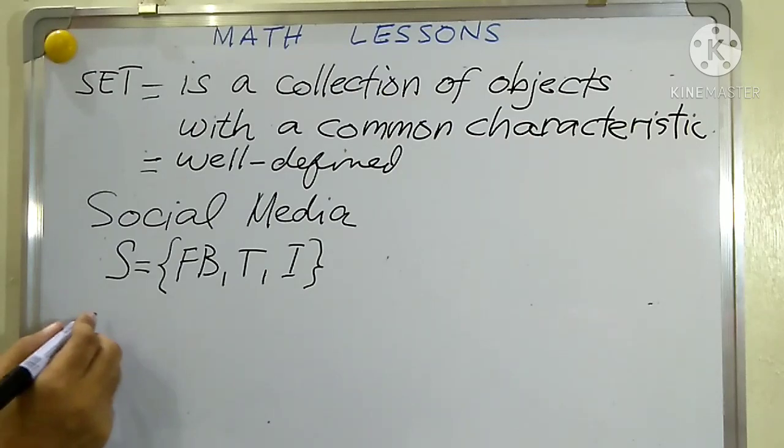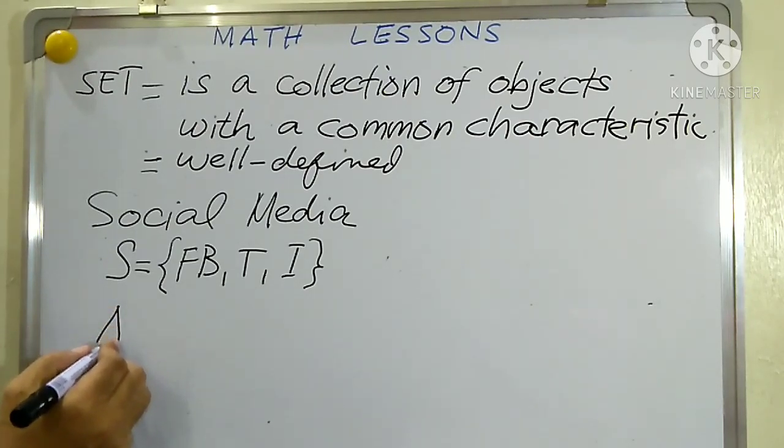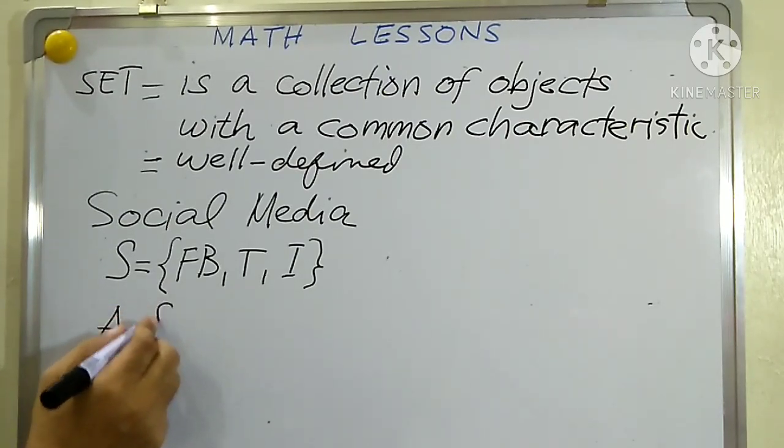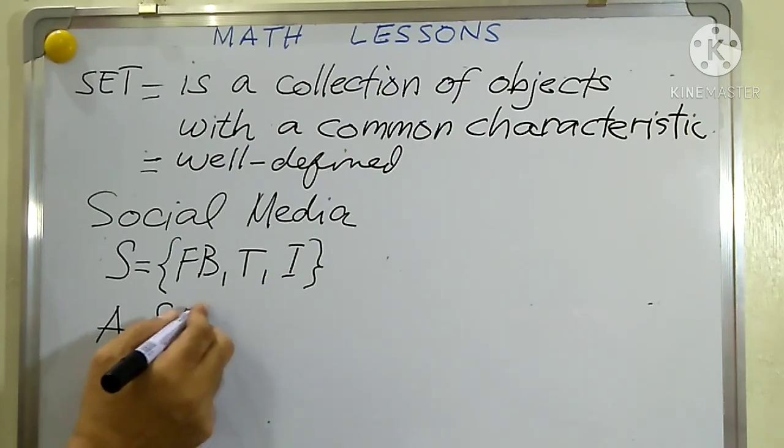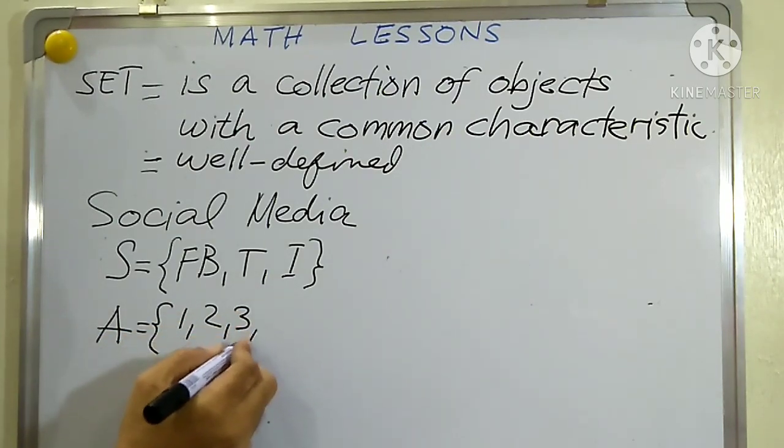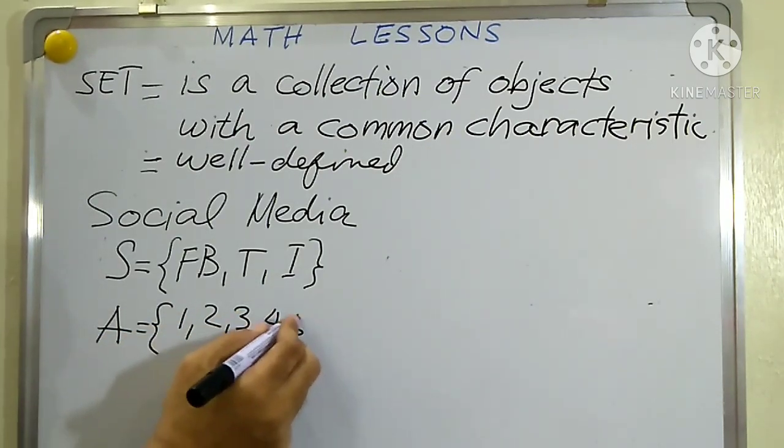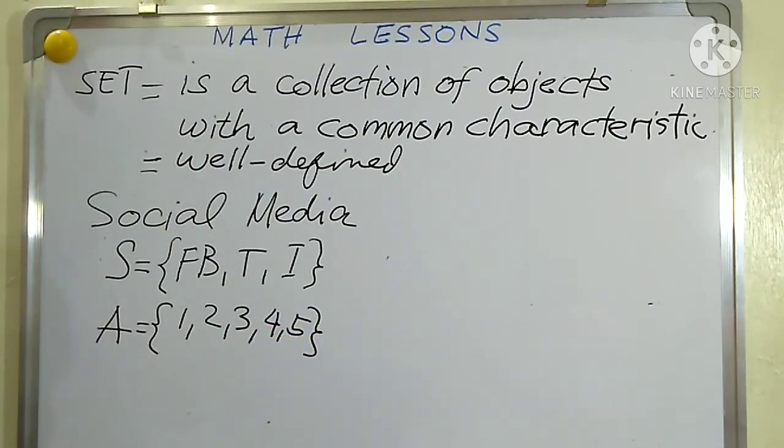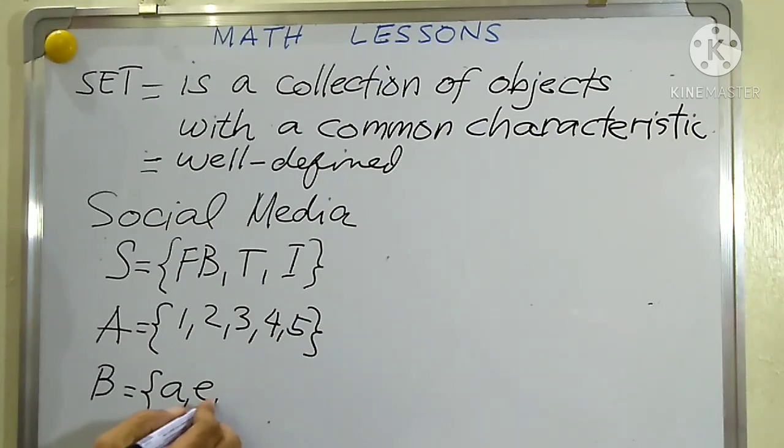We have another example of a set. Let us call this set A whose elements are 1, 2, 3, 4, and 5. Another example of a set: we have set B whose elements are A, E, I, O, U. That is how to write a set.